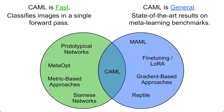We find that CAMEL is extremely fast: by design, it can classify images within a single forward pass. But it is also extremely general. Without meta-training on downstream benchmarks, it can match the performance of state-of-the-art meta-learners that have been meta-trained on each of those benchmarks.